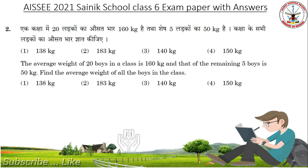Next question: The average weight of 20 boys in a class is 160 kg and that of the remaining 5 boys is 50 kg. Find the average weight of all the boys in the class. Check the options. If you know the answers, please put the comments below. Answer is 138 kg.